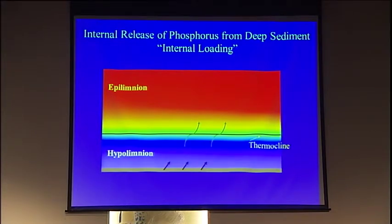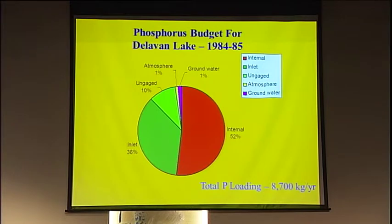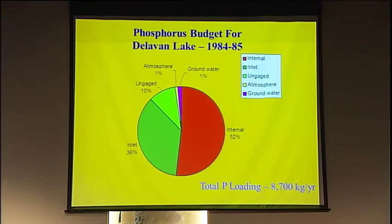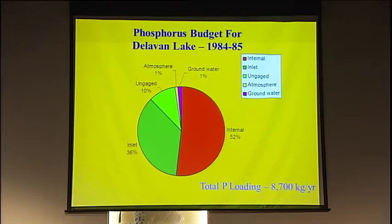Those are the phosphorus levels that creep up into the epilimnion. Based on our results, this is the overall phosphorus budget — where all the phosphorus is coming from. Before, we had a whole lot coming from point sources; we eliminated all that. Now we've got a lot coming from the bottom — about 50% from the bottom, about 40% coming in from the watershed from one inlet, another 10% from the rest of the watershed. We have a total loading of about 9,000 kilograms coming into the lake — about the same amount the EPA had estimated — but now a lot more was coming from internal loading.